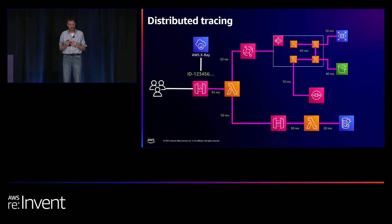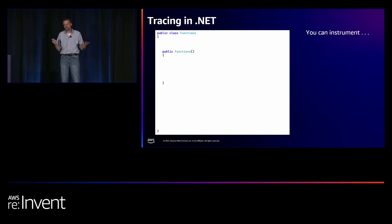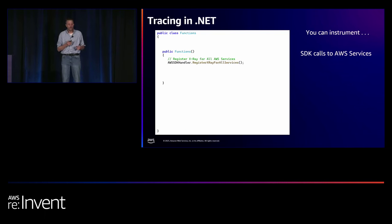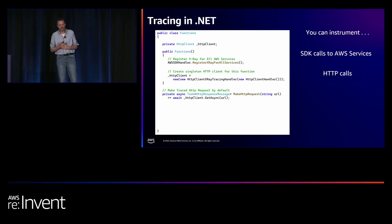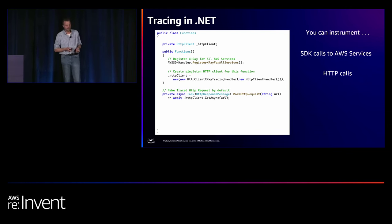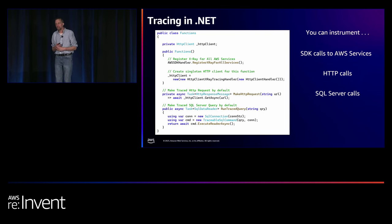Not every service handles trace ID propagation the same way. But when writing your .NET Lambda functions, it's actually pretty easy to maintain that continuity and make sure the trace ID is passed correctly. If you're using the AWS SDK for .NET, a single method call allows you to instrument all calls to downstream AWS services. For external HTTP services, there's a library to instrument those. And there's also a library that allows you to instrument SQL Server calls to investigate database performance bottlenecks.